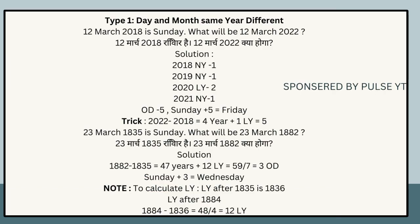Type 1 — Same date and month, different year. The 12th of March 2018 is Sunday; what will be the 12th of March 2022? Solution: 2018 = 1 odd day (normal), 2019 = 1 odd (normal), 2020 = 2 odd (leap), 2021 = 1 odd (normal). Total = 5 odd days. Sunday + 5 = Friday. Quick trick: 2022 − 2018 = 4 years + 1 leap = 5 odd days.